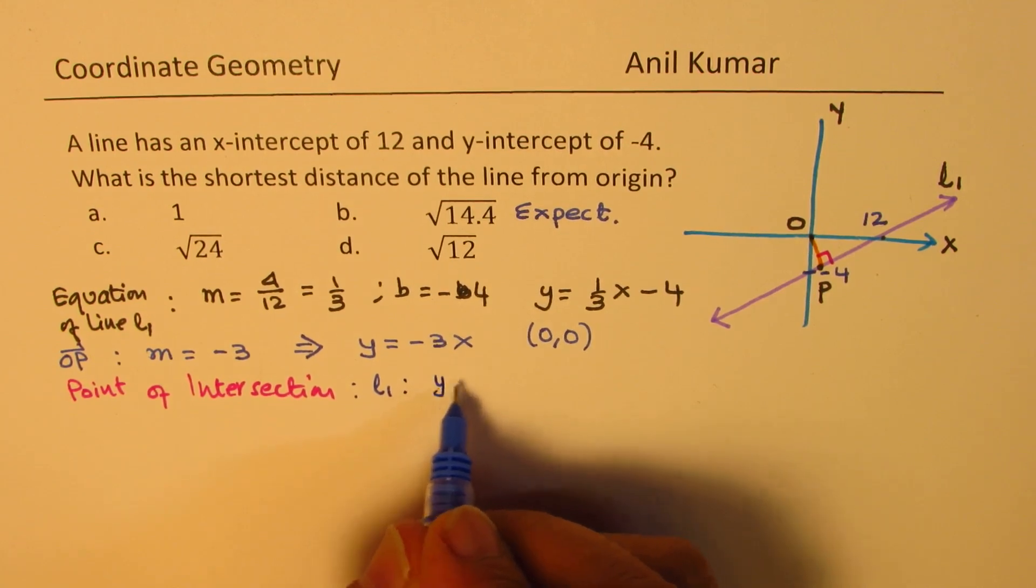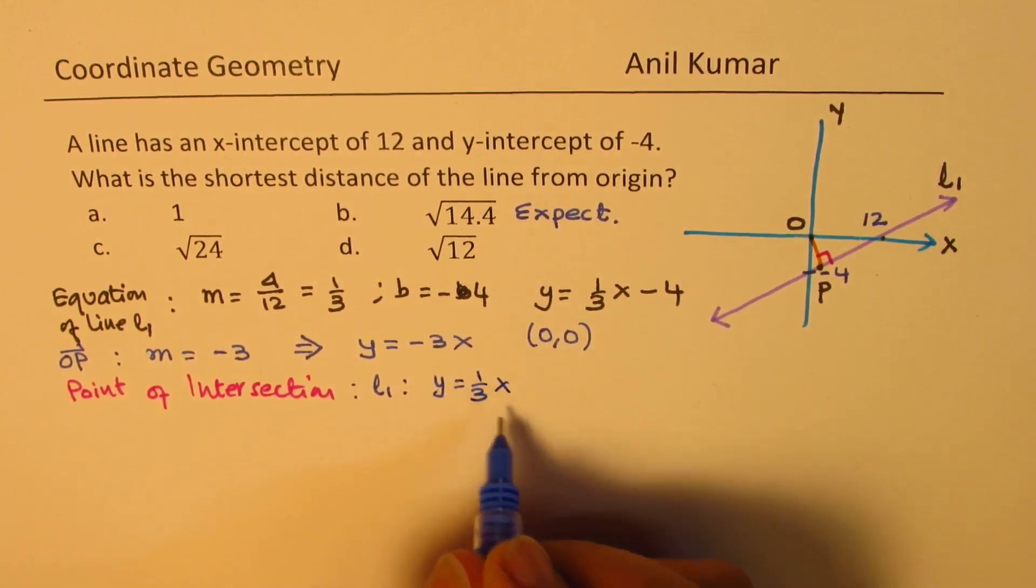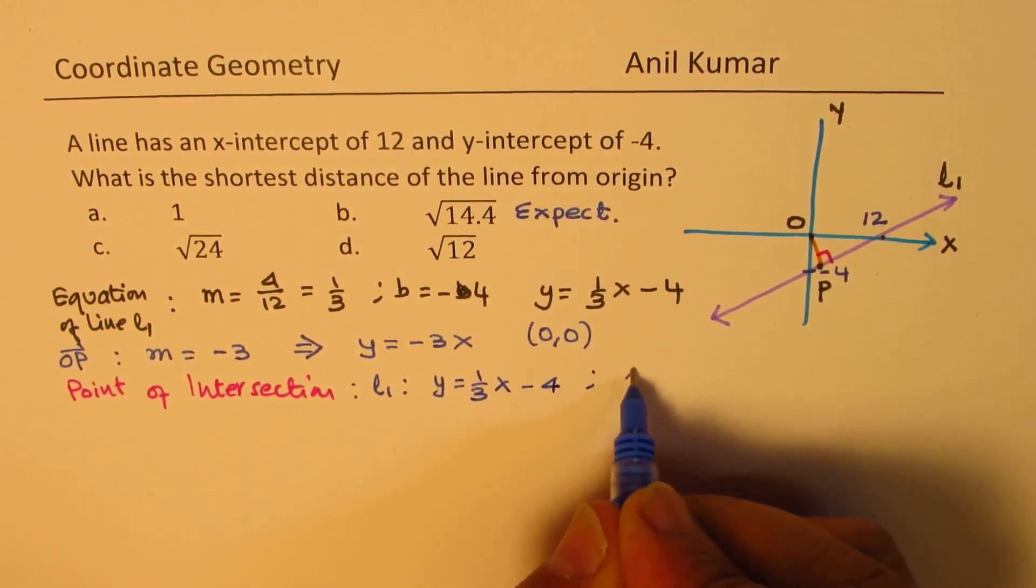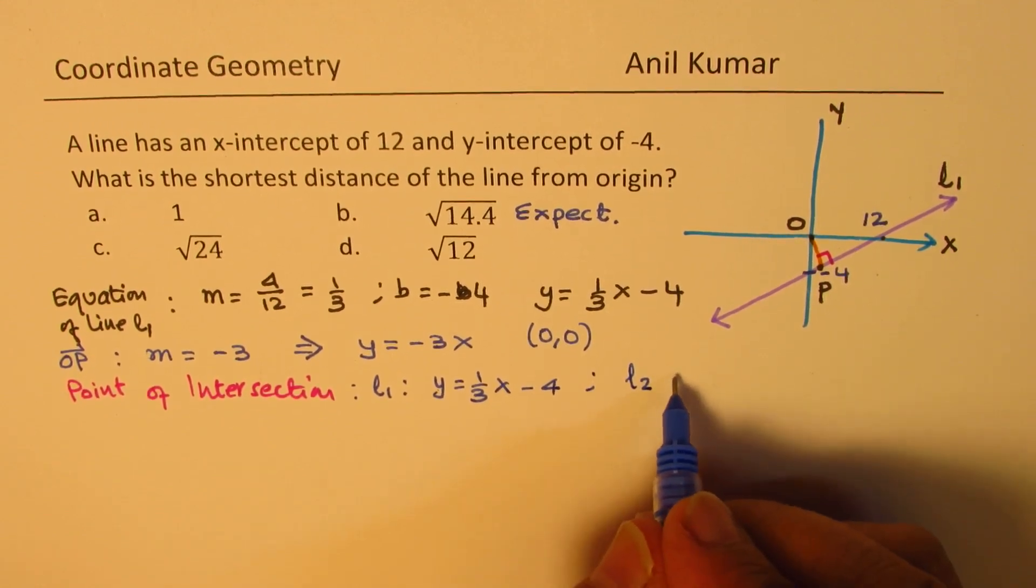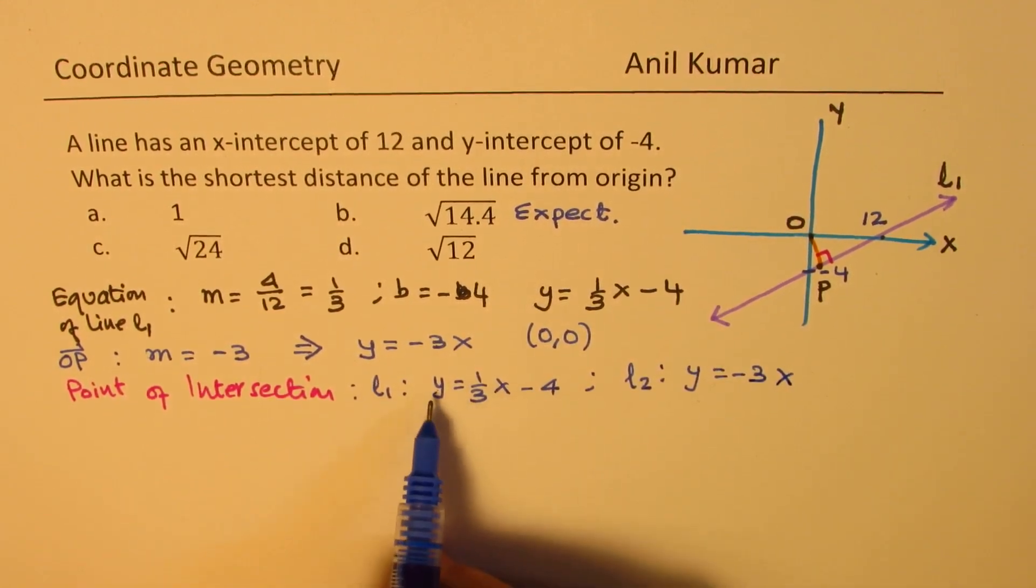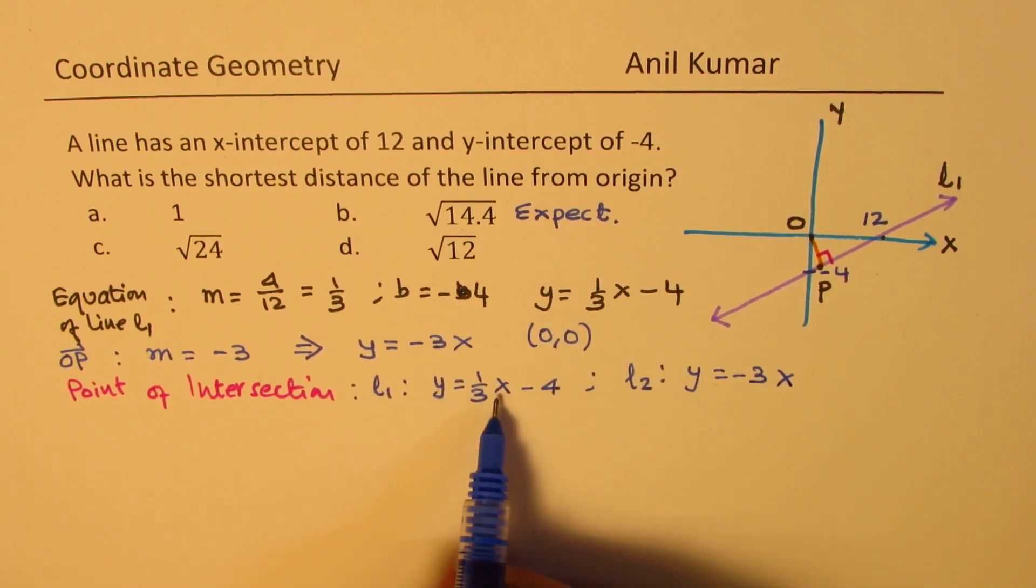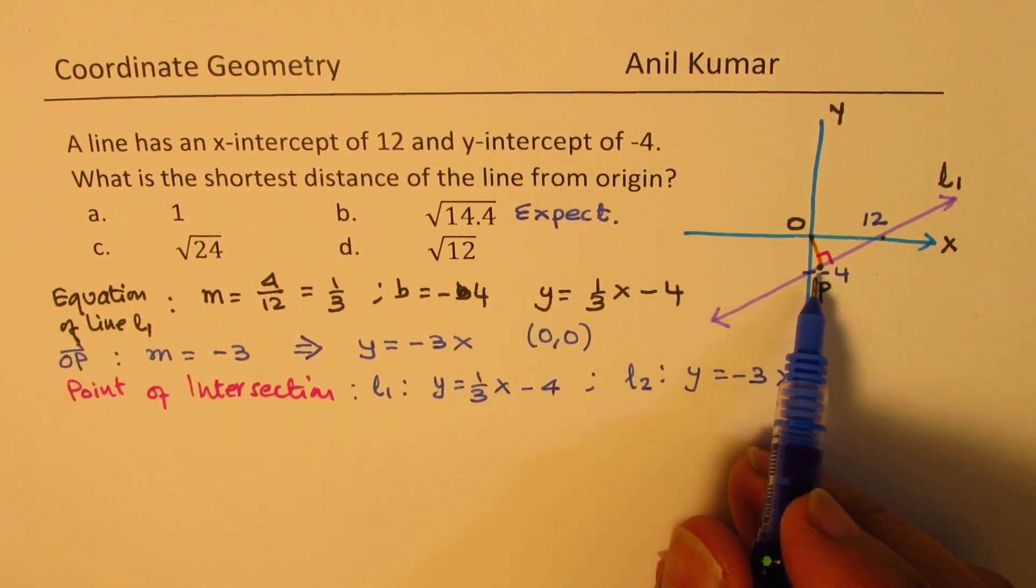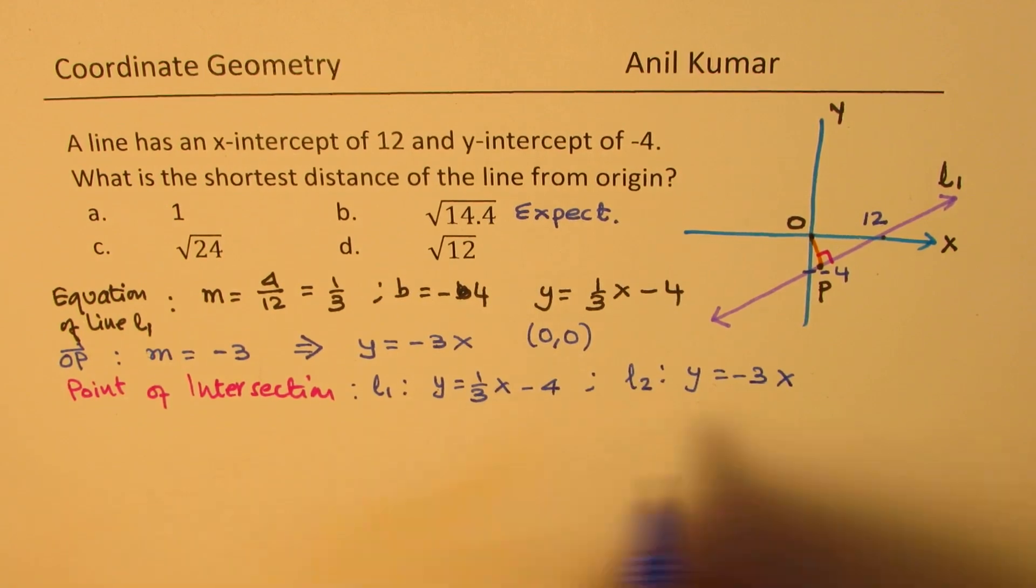So, L1 is basically Y equals to 1 over 3X minus 4. And the second line, let's call it L2, is Y equals to minus 3X. So, if I write here minus 3X and solve for X, we know the point P. So, let us solve.